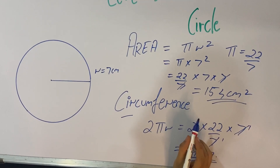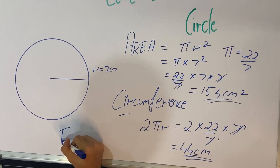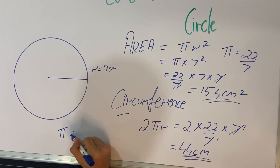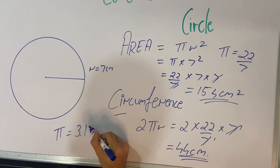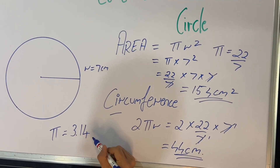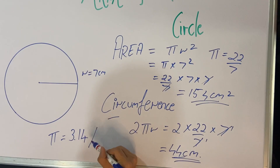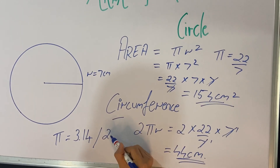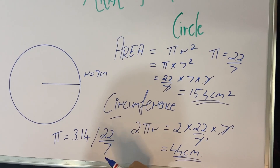Also remember that the value of pi is also 3.14. If it is mentioned in your book, use 3.14; if it is not mentioned, then you can assume it as 22 upon 7.